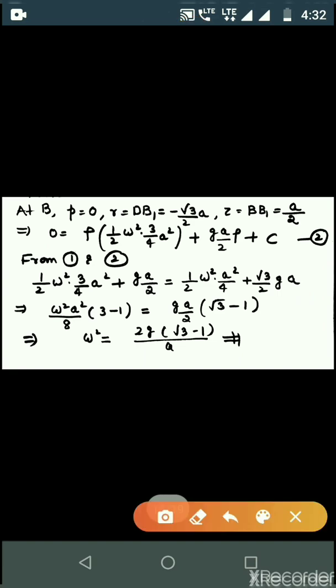Next, at point B, again pressure will be zero. At both A and B points, pressure will be zero because they are the free surface. On the free surface, since it's a closed tube, there's no atmospheric pressure, so pressure is zero. r value is OB1 which equals minus root 3 by 2 a, and z value is BB1 which equals a by 2. Putting these values, this equation for c is obtained.